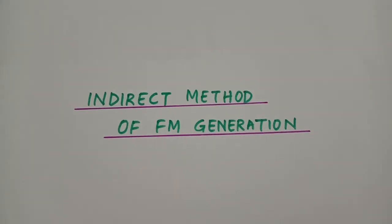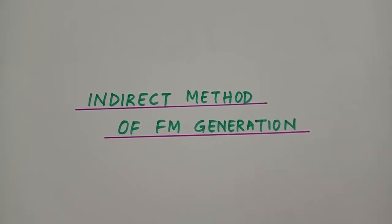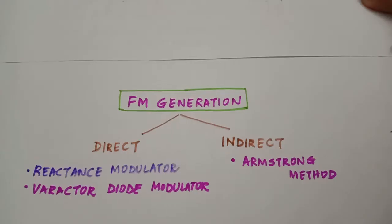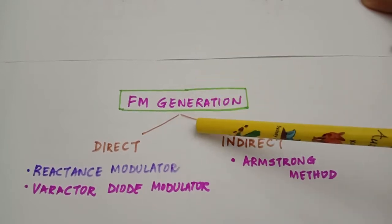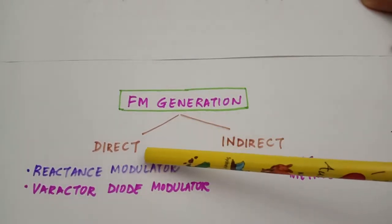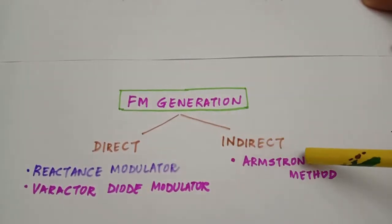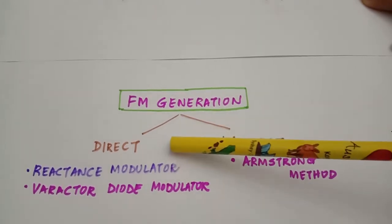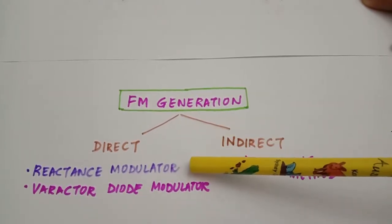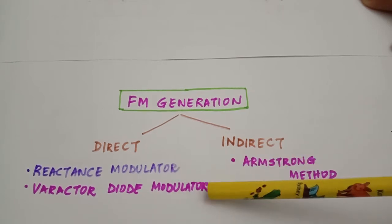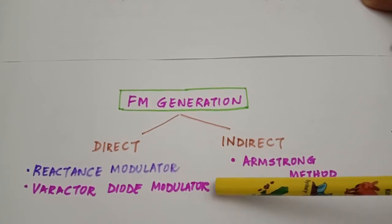Hello everyone. In today's lecture we are going to discuss an indirect method for generating frequency modulated wave. We have already seen in the previous lectures that FM waves can be generated either by the direct method or by using indirect methods. In direct methods we have already studied the reactance modulator circuit for generating FM and the varactor diode modulator for generating FM.